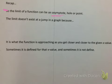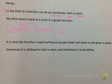To recap: the limit of a function can be a vertical asymptote value, a hole in the graph (the y value of the hole), or the defined y value if the graph is continuous. The limit does not exist at a jump in a graph because the left limit does not equal the right limit. A limit is what the function is approaching as you get closer and closer to the x value — not always the actual y value — so it doesn't matter if there's a hole or an asymptote. Sometimes it's defined, sometimes it's not.